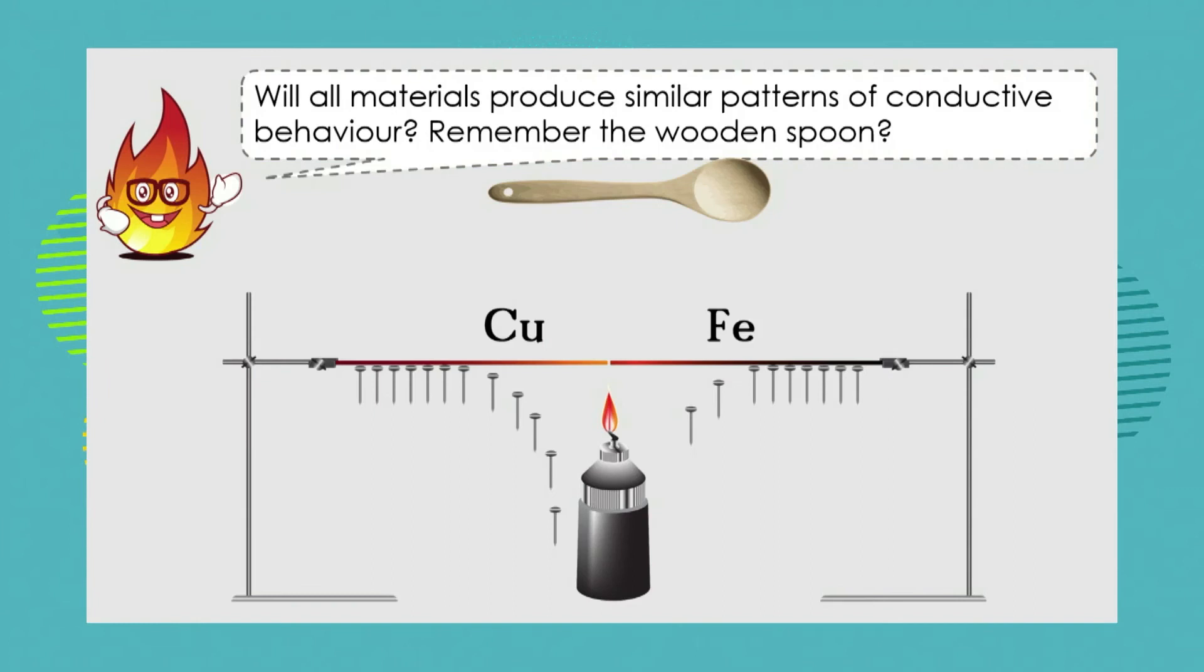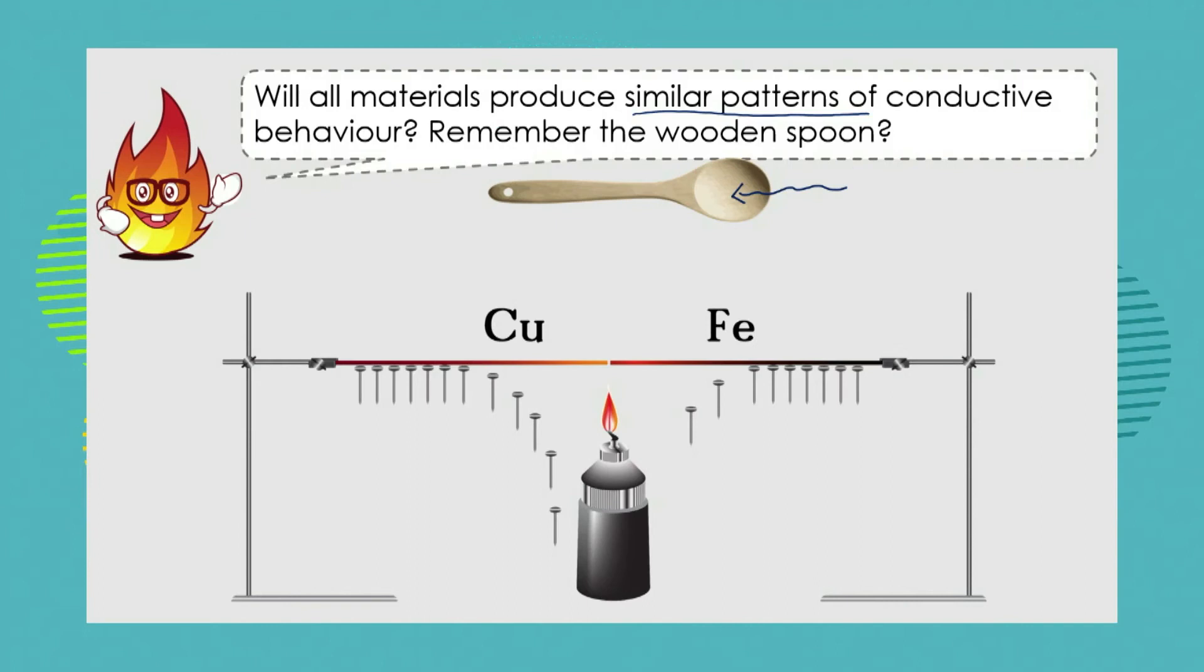Will all materials produce similar patterns of conductive behavior? Remember back to the last lesson when we learned about Chris and Chloe making their hot soup and Chris burning his fingers on the hot metal spoon, and Chloe gave him the wooden spoon and said this won't get as hot. So we now want to investigate, do all metals or all materials produce similar patterns of conductive behavior? In this investigation we're going to use our little blob of wax, and into that we're going to implant our little nail or drawing pin. We're going to let the wax go solid again, and then we're going to hang two rods equal distance away from our heat source, but instead of using the same metal, we're going to use a different metal for each rod.